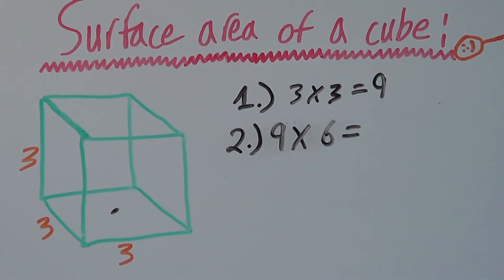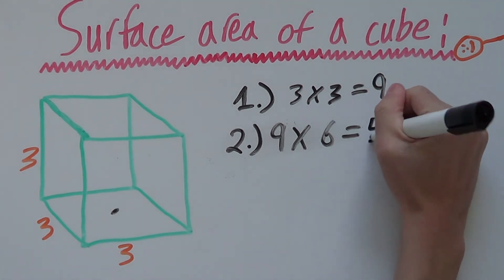We times it by six because there are six sides on a cube. And since we found the area of one side, if we times it by six, that will give us the surface area because we have found the area of all six sides, or the whole entire surface.